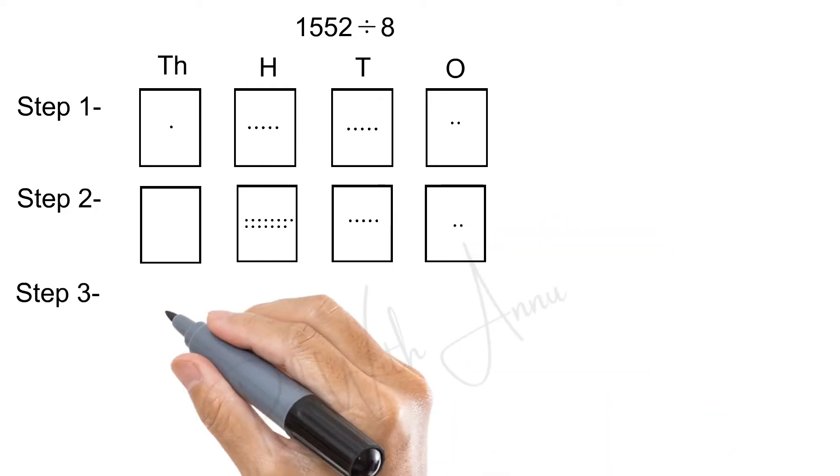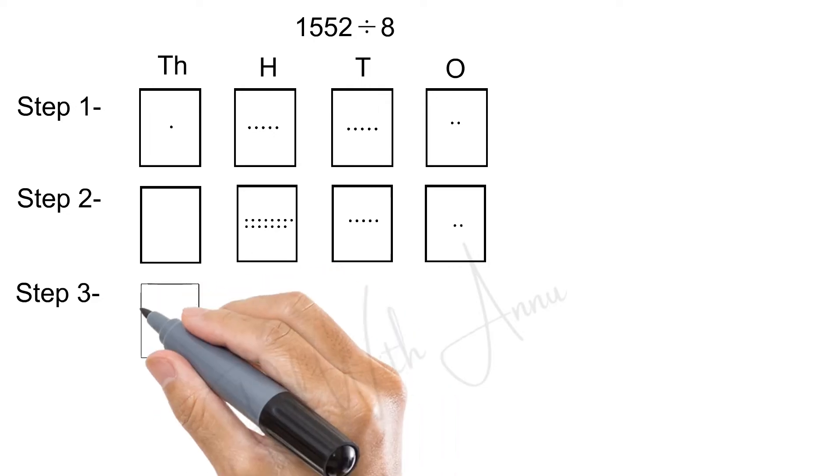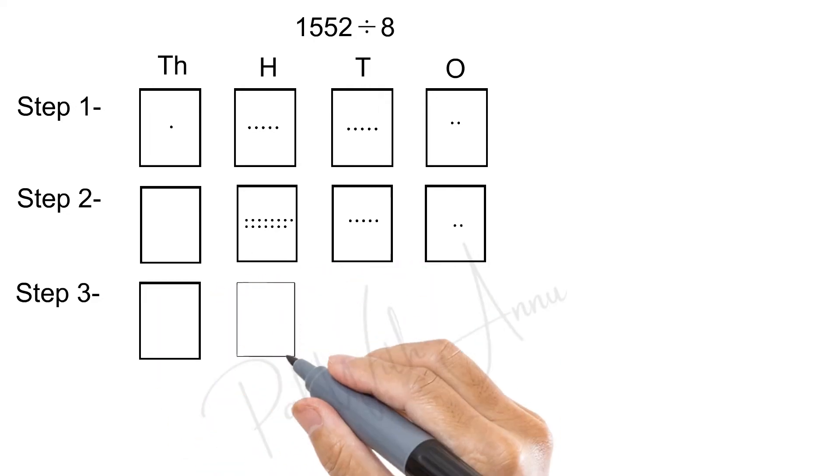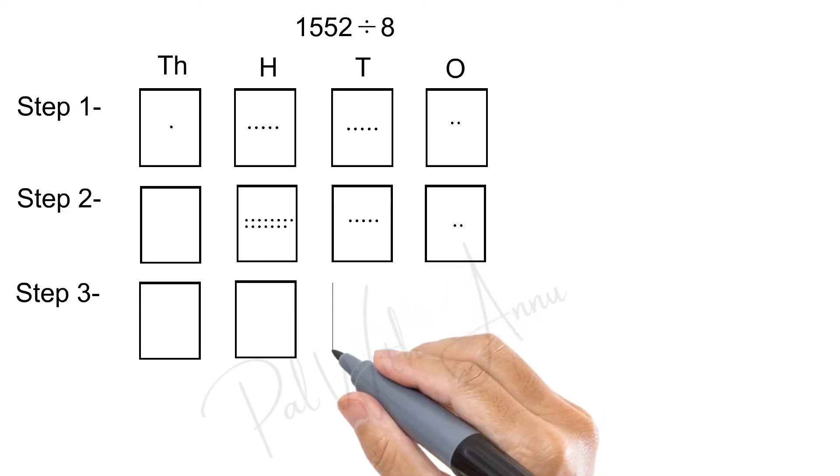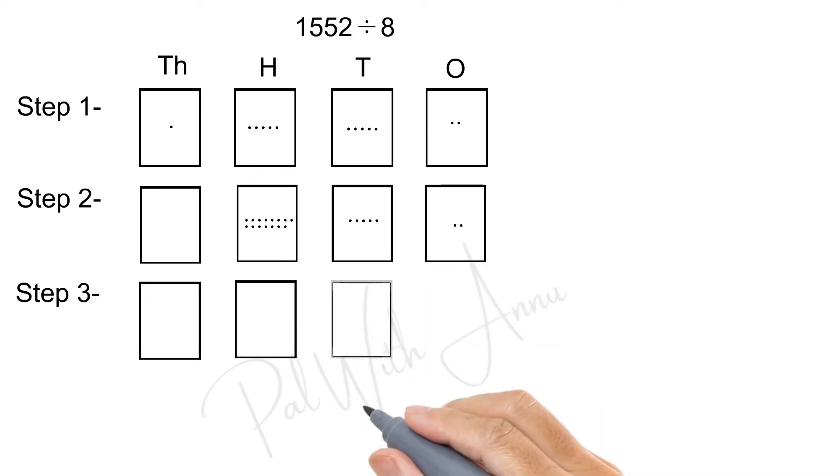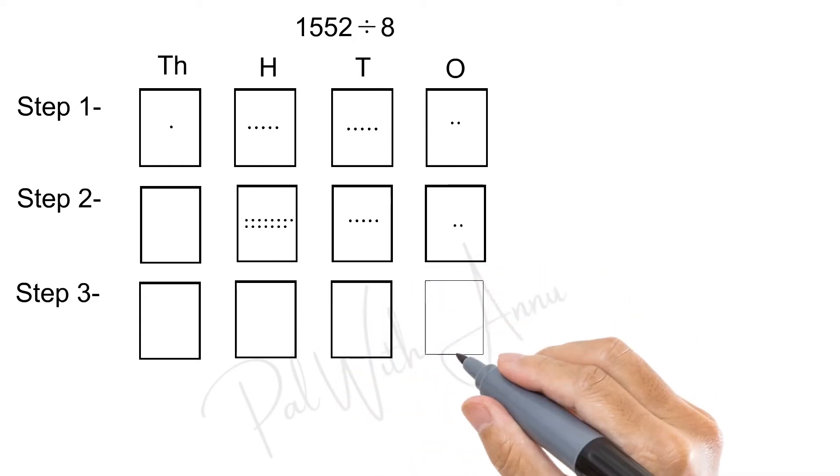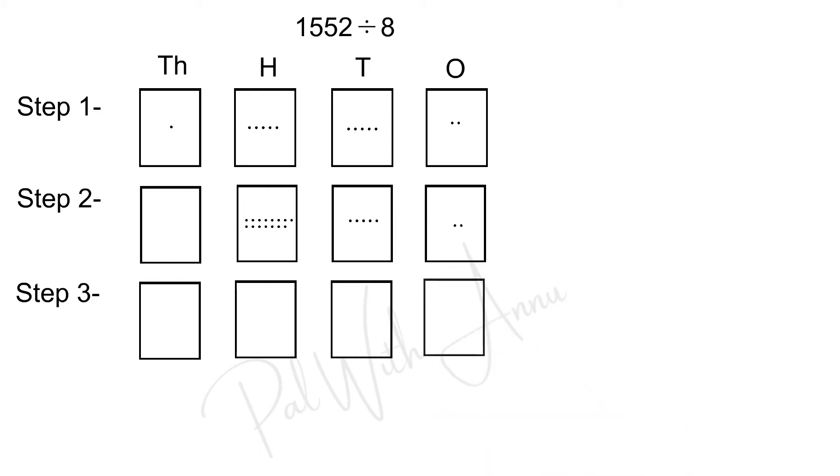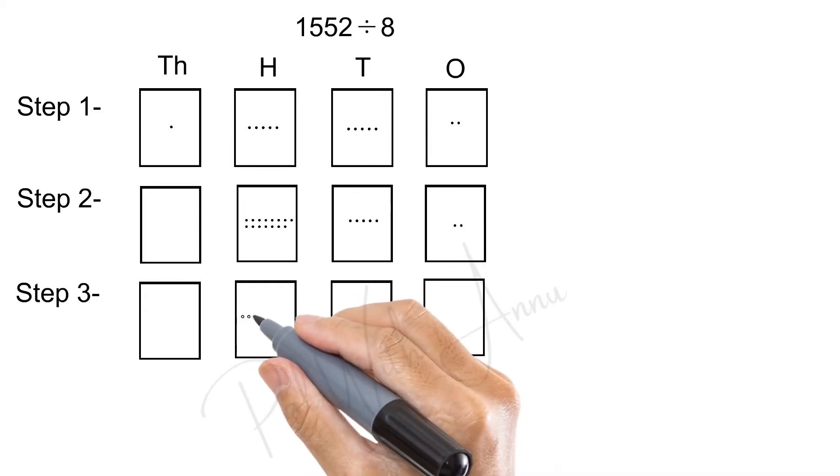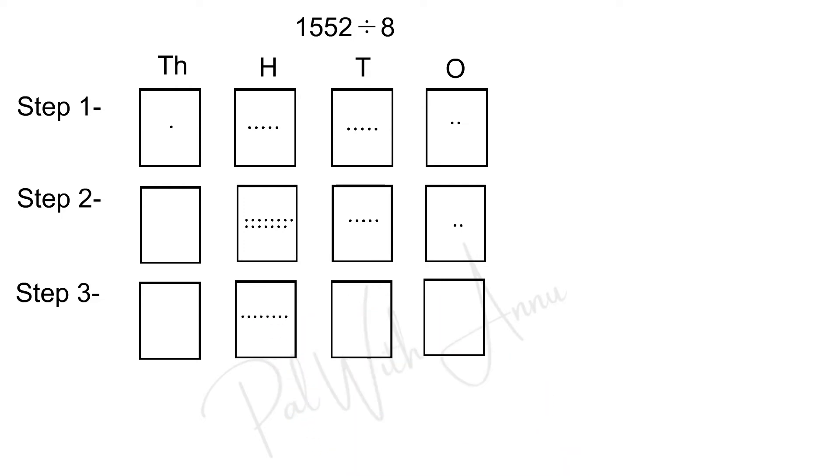Let us move to step number 3. Again, draw the 4 boxes. 1000's place is 0. And in the 100's box, as I said earlier in step 2, we have to move 7 from 100's box to 10's box. Now, the 10's box will become 75.